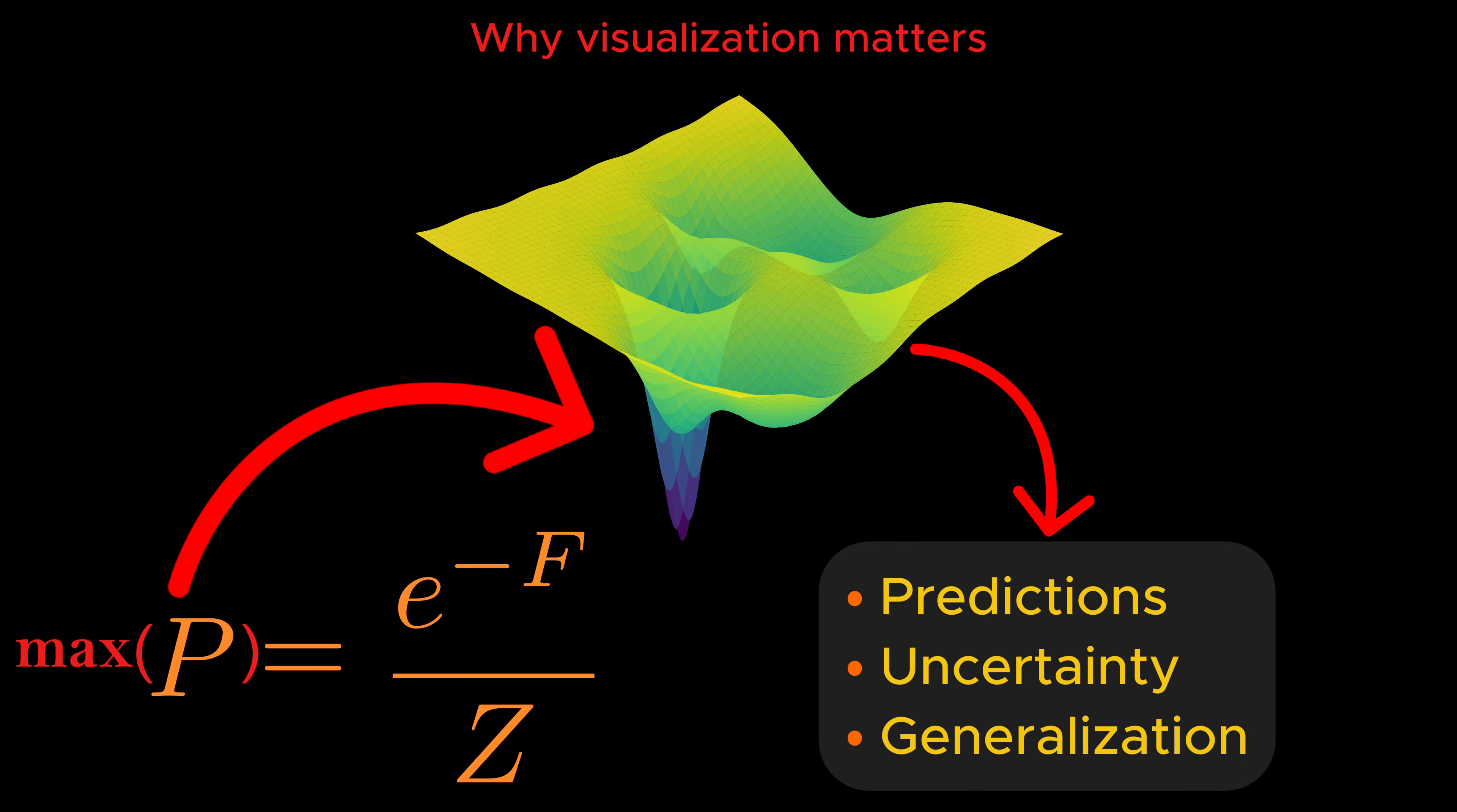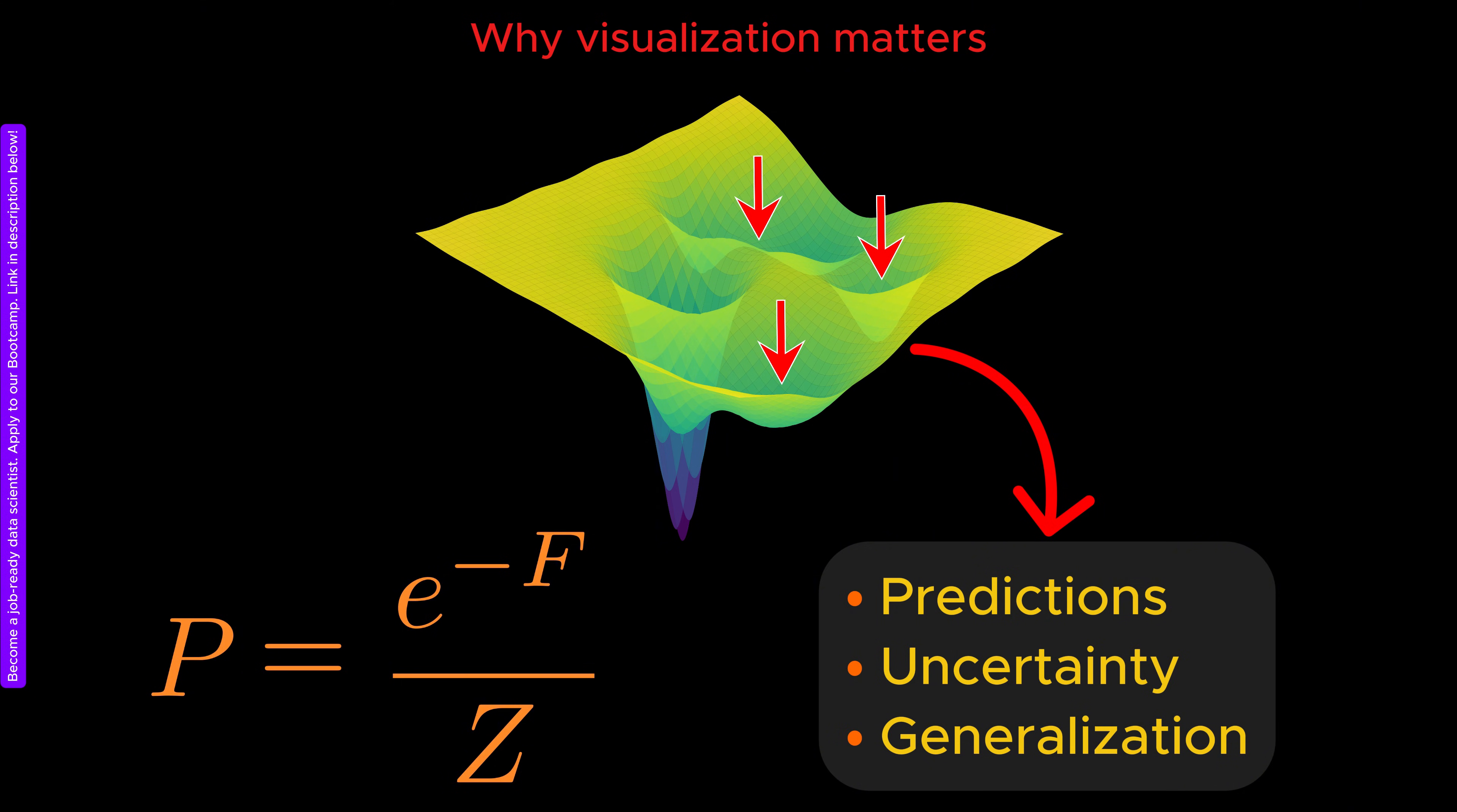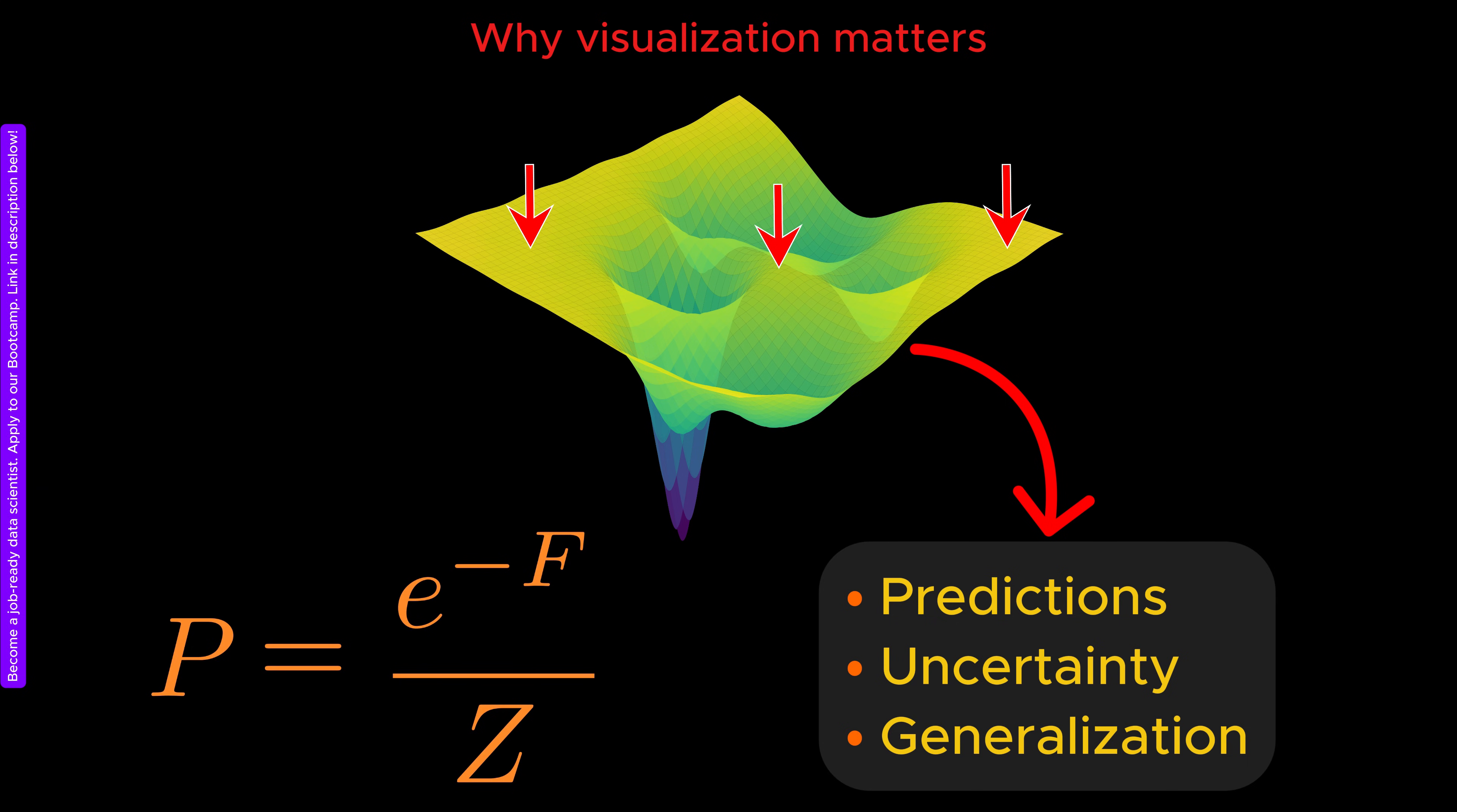Once again, we are faced with the problem of searching for a minimum in a very high dimensional space. The same challenges arise here as with loss functions. We want to avoid false local minima, and we want to avoid getting stuck in flat regions. Once again, having a global view of the landscape would help us answer these questions much more quickly.